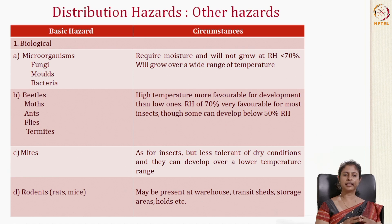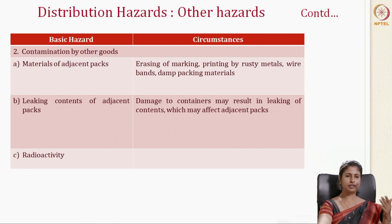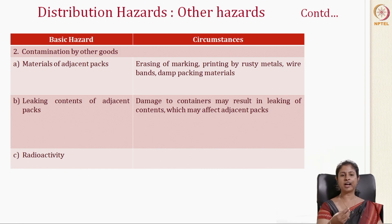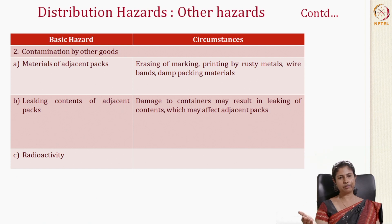Mites are another problem, more tolerant to dry conditions than insects. Rodents like rats and mice may be present in warehouses, transit sheds, and storage areas. Contamination from other goods is also a hazard — materials from adjacent packs can erase markings and printings, and rusty metals, wire bands, and damp packaging materials can affect transit packaging. Leaks from adjacent packs and radioactivity are additional concerns.